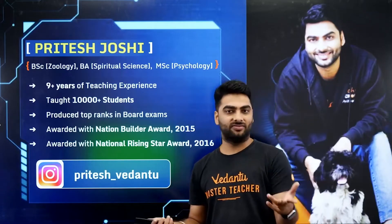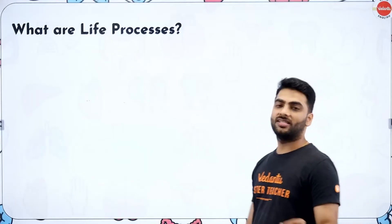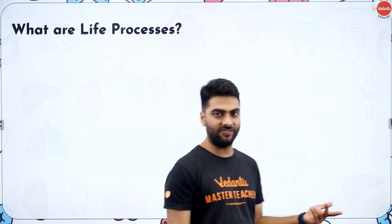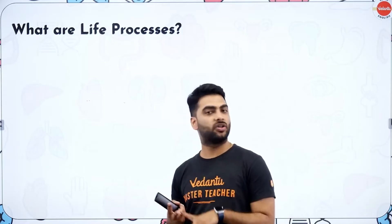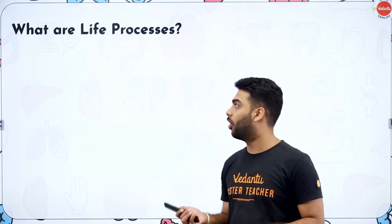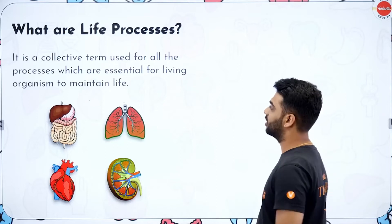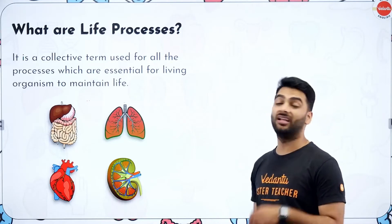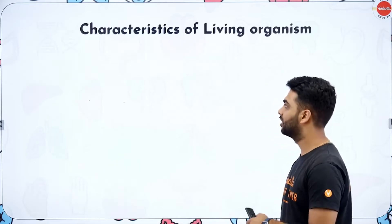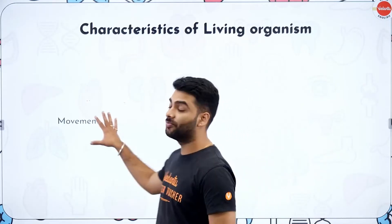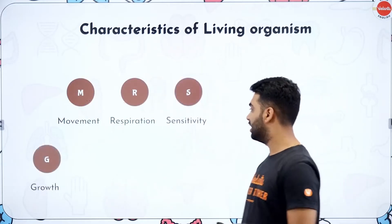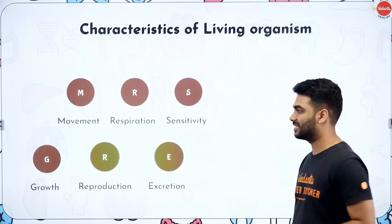What are life processes? These are the processes that a living organism goes through to keep itself living. They include respiration, circulation, excretion, transportation, and more — collectively used for all processes that make a living organism alive, like digestion, respiration, circulation, and excretion. Every living organism moves, undergoes respiration, sensitivity, growth, reproduction, and excretion.